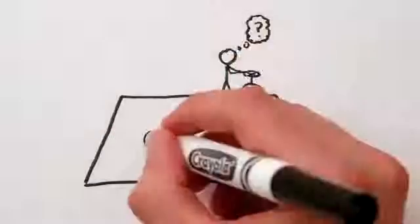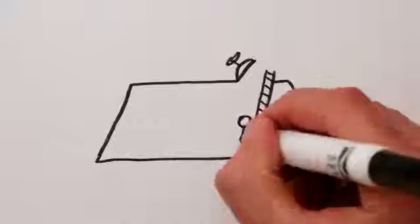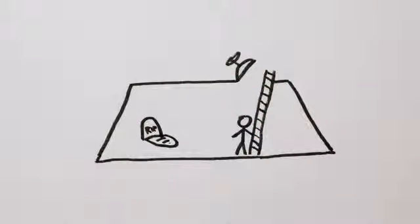The quantum mechanical interpretation is that before we look, the cat is in a superposition. It's both dead and alive. And our act of looking forces nature's decision. So our curiosity kills the cat.